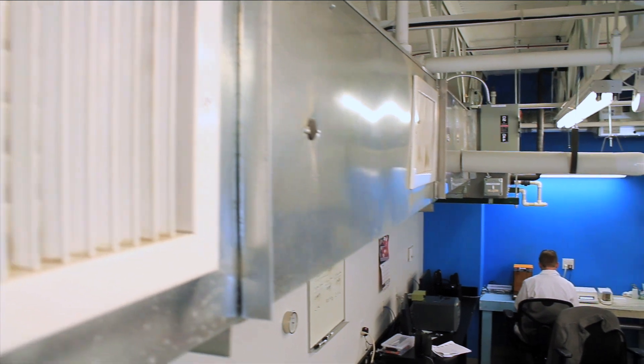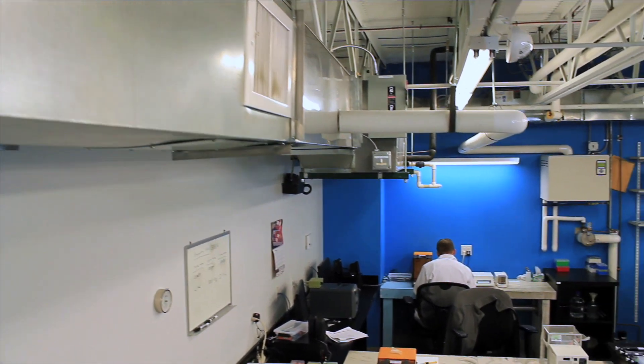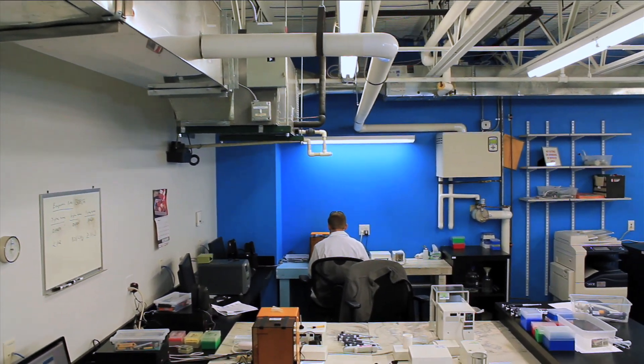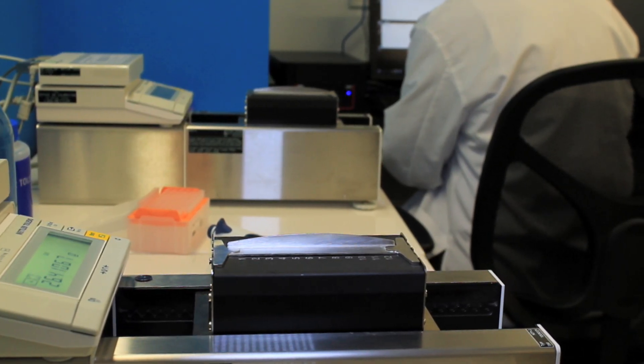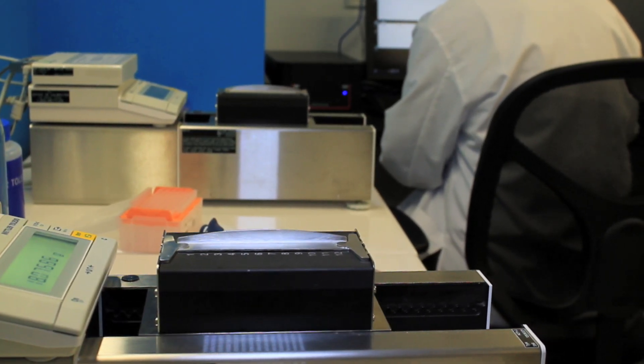Proper calibration all begins by controlling the measurement environment, thereby reducing the uncertainty of the measurement. Correct atmospheric temperature and humidity are generated, monitored, and recorded according to 8655 procedures.